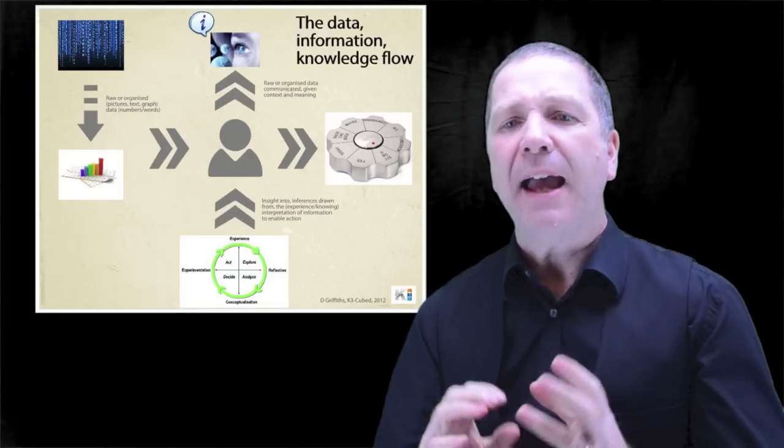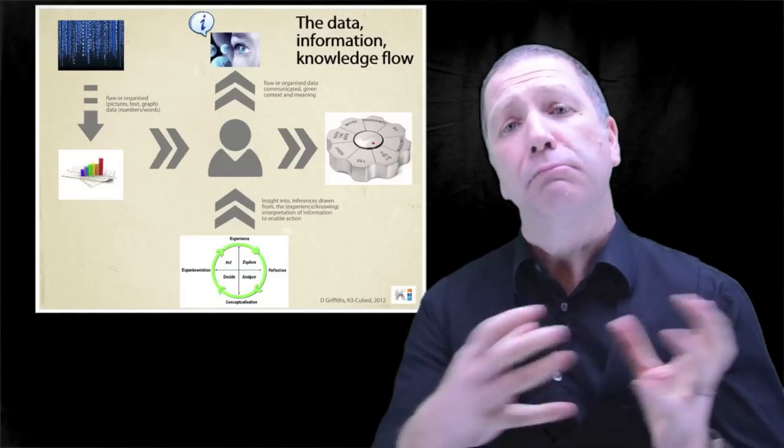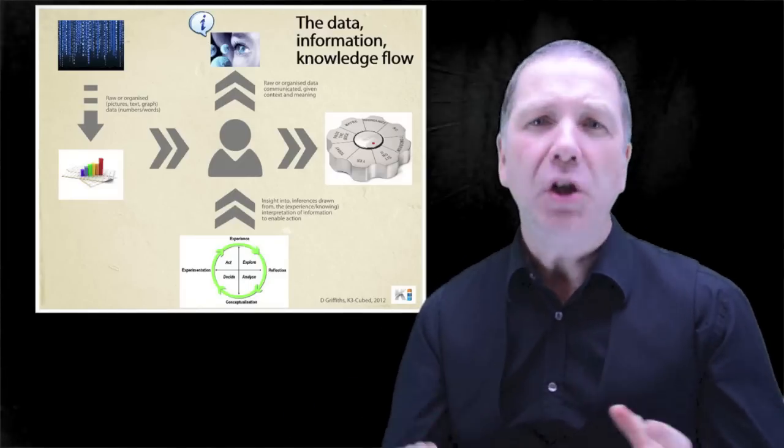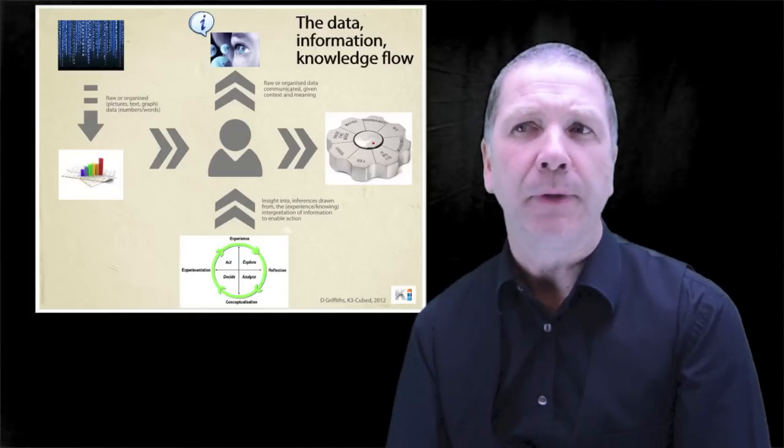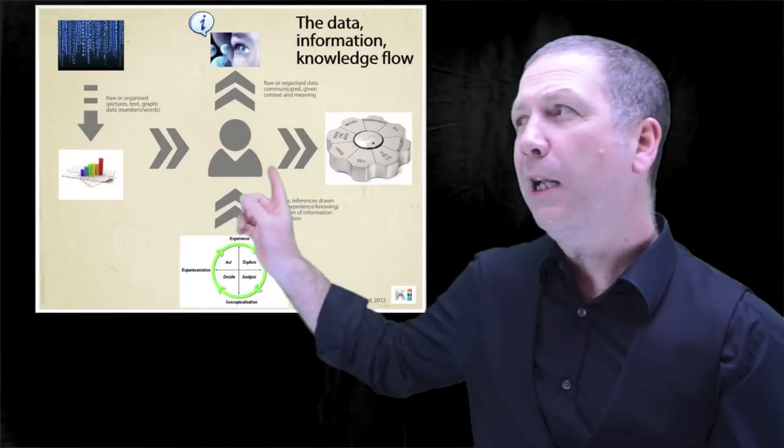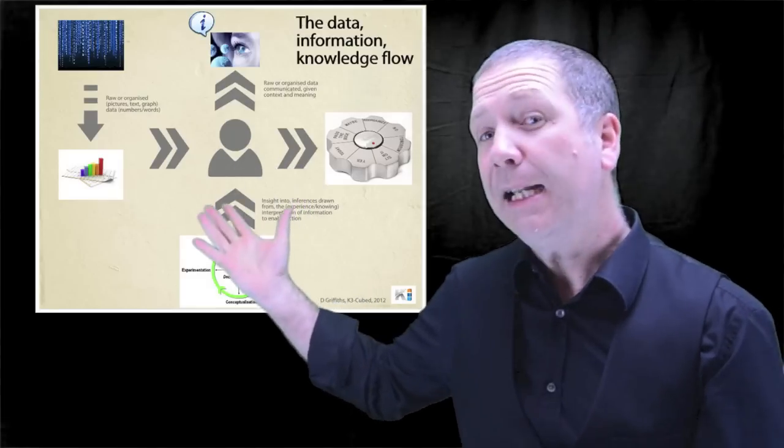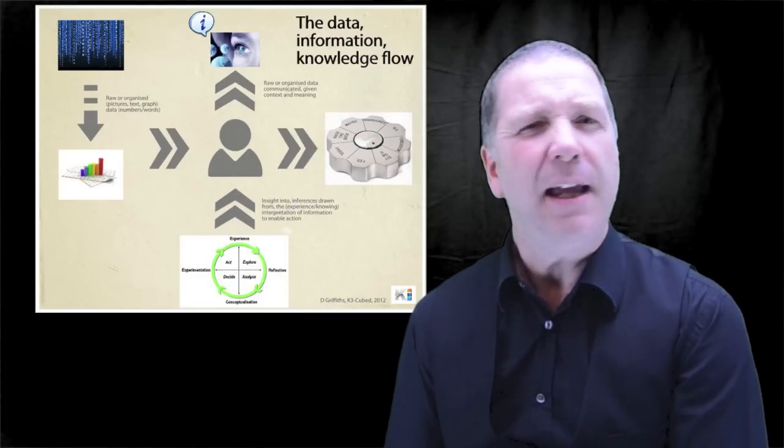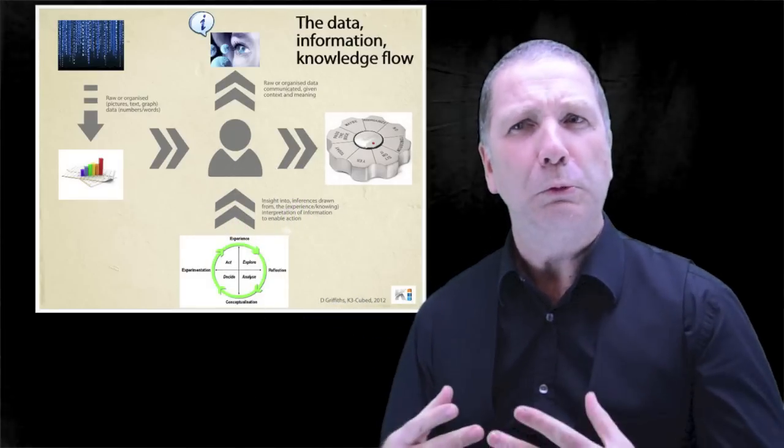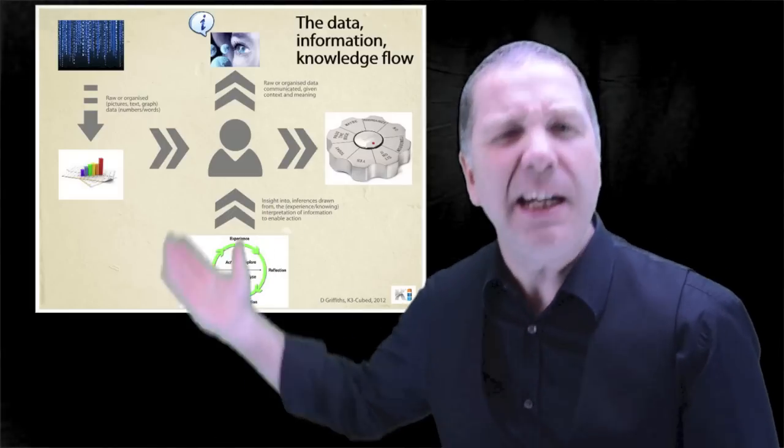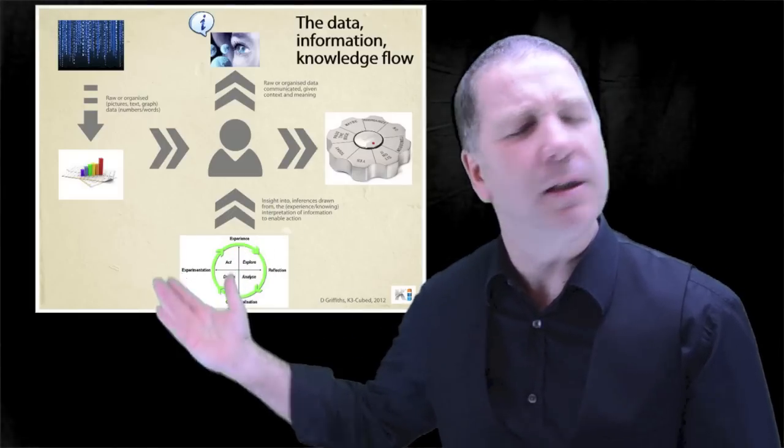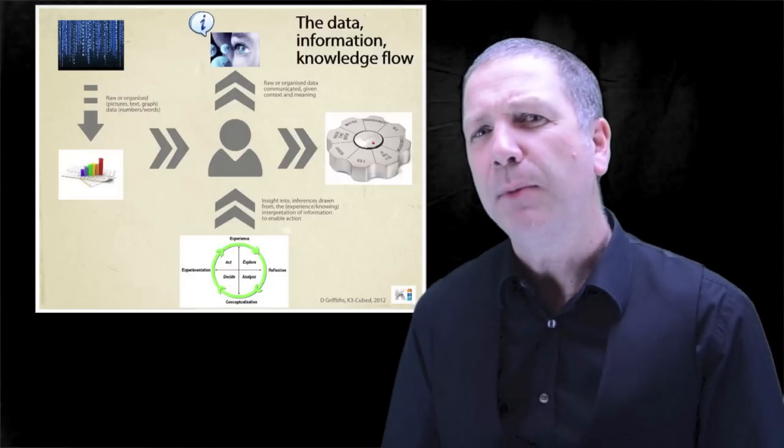Information is that raw or organized numbers or words interpreted, communicated, given some context or meaning. Well, if we're going to be talking about context or meaning, then doesn't that involve people? Don't we bring that context or meaning? So haven't we come into the process? And does that mean that it's no longer just about information technology?